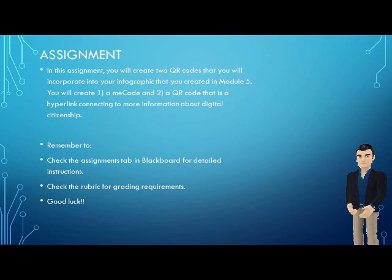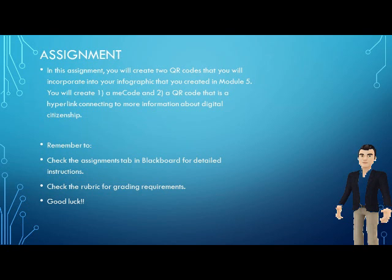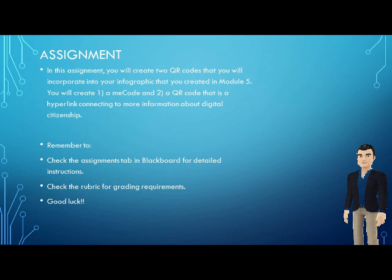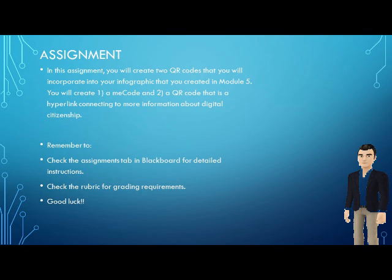To do this you need to check the instructions on the assignment tab in Blackboard. They're very detailed and step by step and will help you get that task completed. Also remember to check out the rubric so you know exactly how you're going to be graded. You're going to have a lot of fun doing this one and you'll see how useful QR codes can be for teacher communication. Good luck and see you soon.